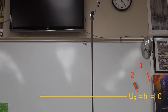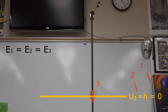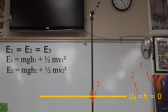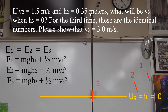Here are three moments in time. The conservation of energy between these moments is E1 equals E2 equals E3: MGH1 plus ½mV1² equals MGH2 plus ½mV2² equals MGH3 plus ½mV3². If the velocity at moment 2 is 1.5 meters per second and H2 is 0.35 meters, what will be V3 when H3 equals 0? Please show that V3 equals 3.0 meters per second.